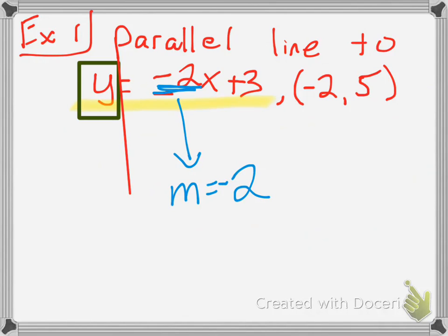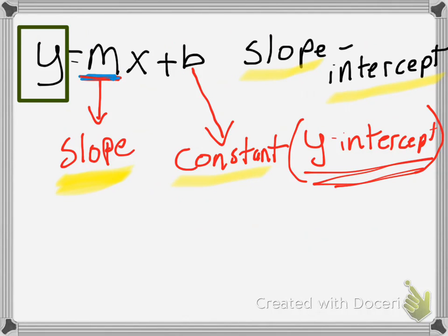The point that this line has to pass through is negative 2, 5. I want to label that as x1, y1. Now, let's go to a different page here. I'll give you a new formula. So, it really shouldn't be new.